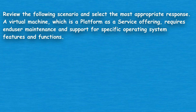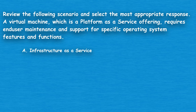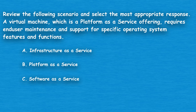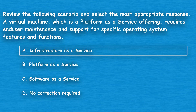The next question: review the following scenario and select the most appropriate response. A virtual machine, which is described as a platform as a service offering, requires end-user maintenance and support for specific operating system features and functions. Option A: Infrastructure as a service. Option B: Platform as a service. Option C: Software as a service. Option D: No correction required. The correct answer is Option A, Infrastructure as a service.